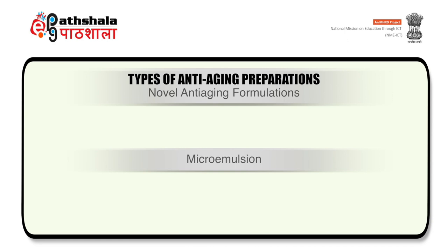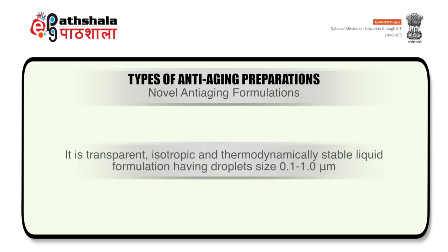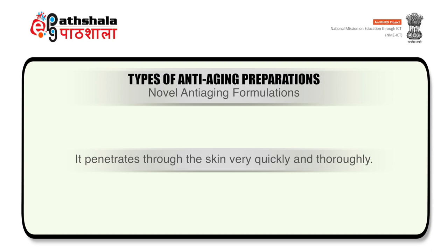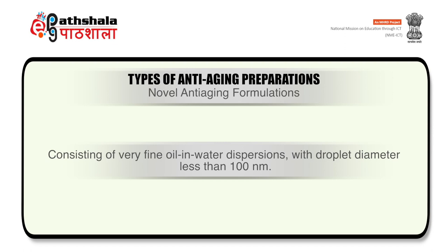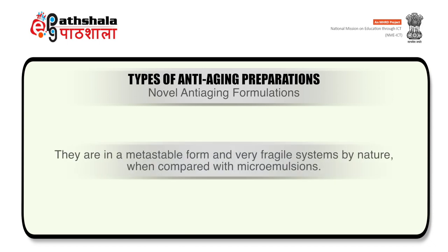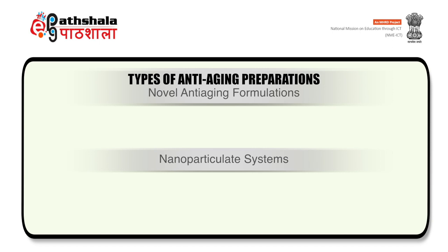Next is microemulsions, which also come under novel anti-aging formulations. It is a three-phase system of water, oil, and surfactant and co-surfactant mixture. It is a transparent, isotropic, and thermodynamically stable liquid formulation having droplet size 0.1 to 1 micron. It penetrates through the skin very quickly and thoroughly. Next type is nanoemulsion. It consists of very fine oil and water dispersions with droplet diameter less than 100 nanometers. They are in a metastable form and are very fragile systems by nature when compared with microemulsions. Nanoemulsions are easily accepted in skin care products because of their rapid penetration, merging textures, and hydrating power.